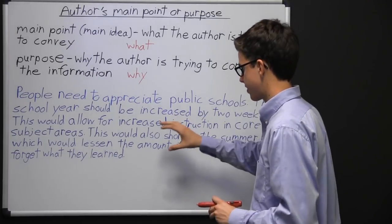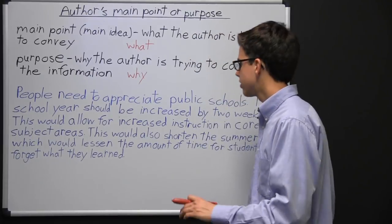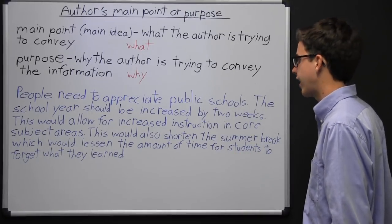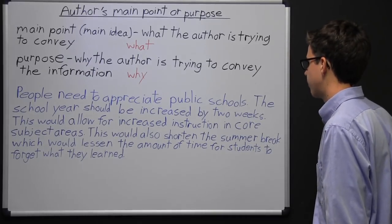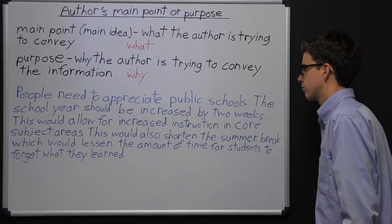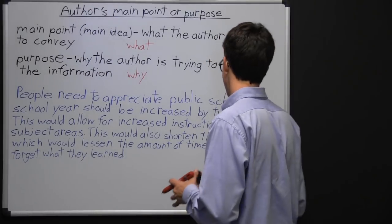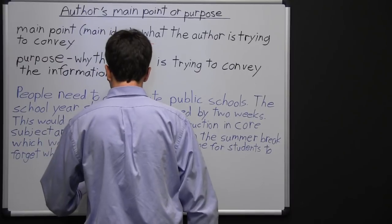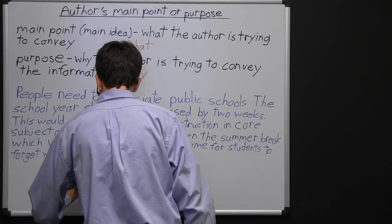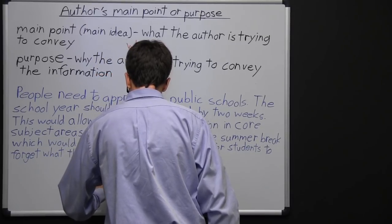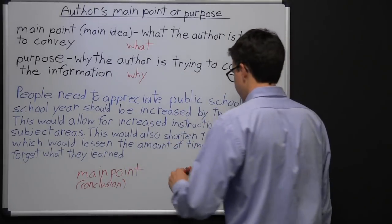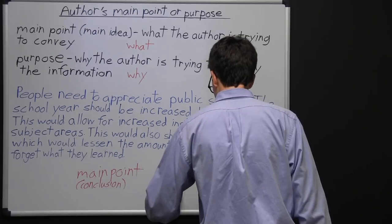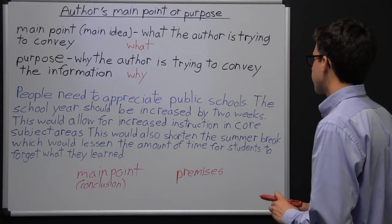We have a passage here and we're going to look at the author's main point. It says: 'People need to appreciate public schools. The school year should be increased by two weeks. This would allow for increased instruction in core subject areas. This would also shorten the summer break, which would lessen the amount of time for students to forget what they learned.' The first sentence — 'people need to appreciate public schools' — could that be a conclusion or main point? Another word for main point is conclusion. We have main point and then premises that back up a main point.